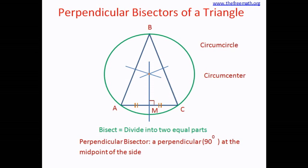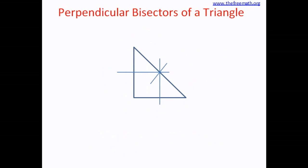The triangle we saw just now is an acute triangle. What happens if it's a right triangle? How would it look? The perpendicular bisectors would look like this. And now you can see that the circumcenter is not inside the triangle, but it is on the triangle.